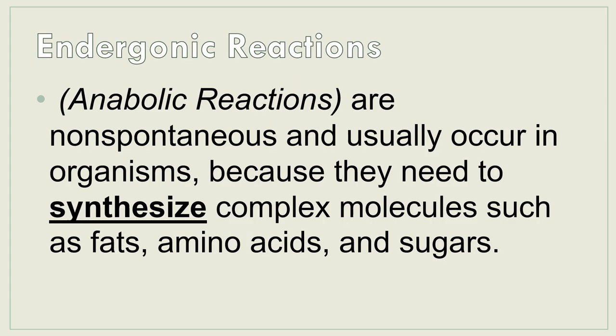We have two types of reactions. First, endergonic reactions — also known as anabolic reactions — are non-spontaneous and occur in organisms because they need to synthesize complex molecules such as fats, amino acids, and sugars. When we say endergonic reactions, we are creating or crafting something to build biomolecules — fats, amino acids, and sugars — which could be for your muscles, bones, or tissues that the body needs. Endergonic reactions are responsible for building those up.